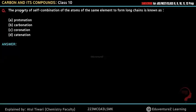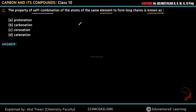Hello everyone. Our question is: the property of self combination of an atom of the same element to form a long chain is known as — protonation, carbonation, coronation, or catenation?